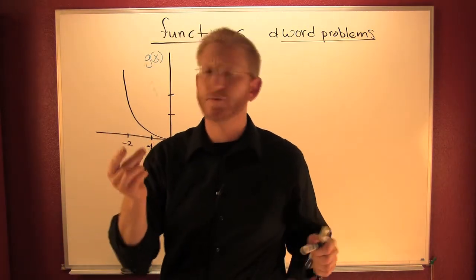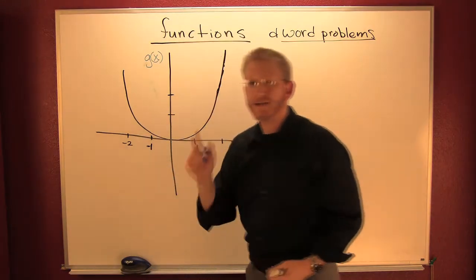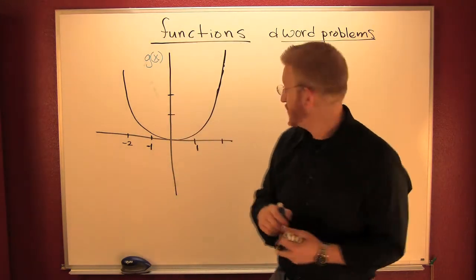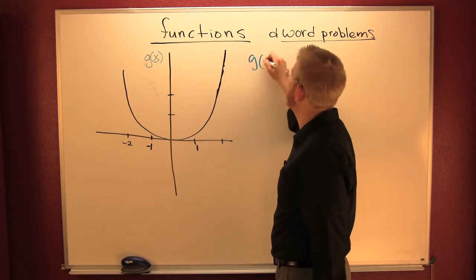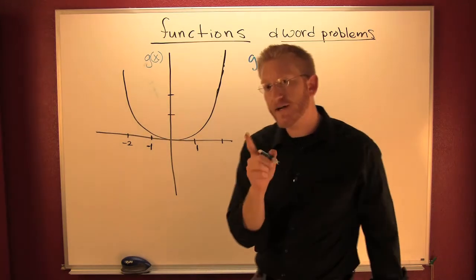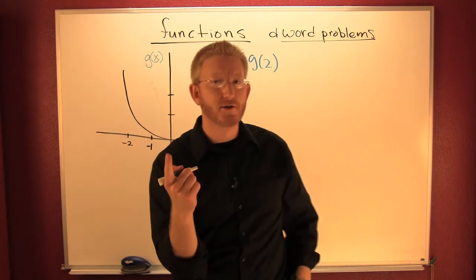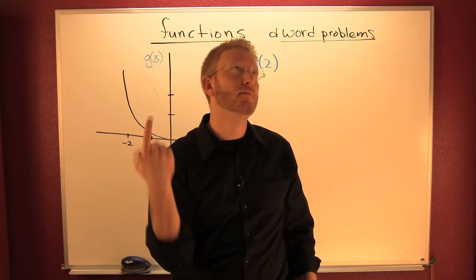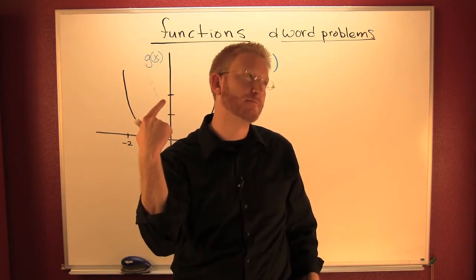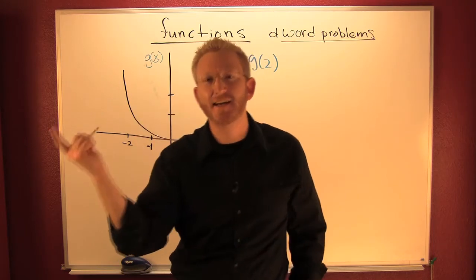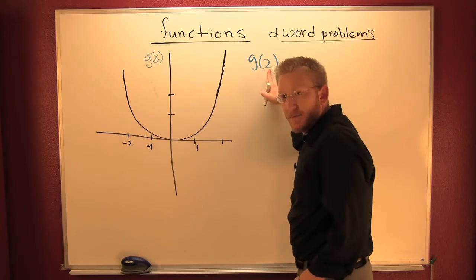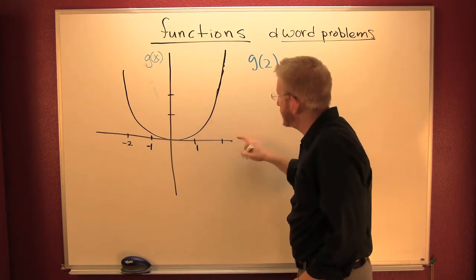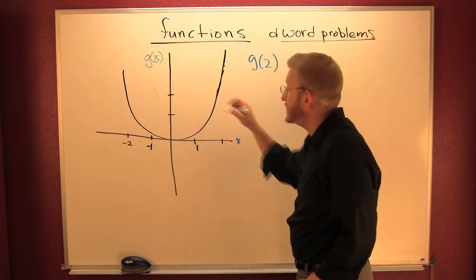Let's evaluate this guy. Let's find G of two. To find G of two, we have to talk about our domain and our range. What's my domain element? It's the x value - that's my x value. This is my x and that's my G of x.